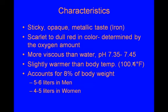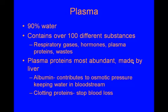Plasma is 90% water and contains over 100 different substances, like respiratory gases — both oxygen and carbon dioxide — hormones, plasma proteins, waste, and all kinds of stuff. The plasma proteins are by far the most abundant and are made by the liver. Albumin is the largest of the plasma proteins and helps contribute to osmotic pressure, keeping water in the bloodstream, which is a big deal since plasma is 90% water. There are also clotting proteins found in plasma, and those help stop blood loss.